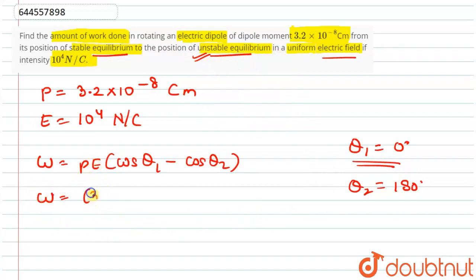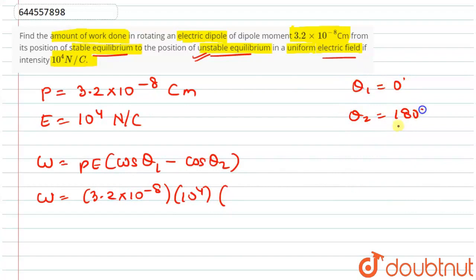P value is 3.2 × 10⁻⁸, E value is 10⁴. θ₁ is 0° and θ₂ is 180°. So it's cos 0° minus cos 180°.